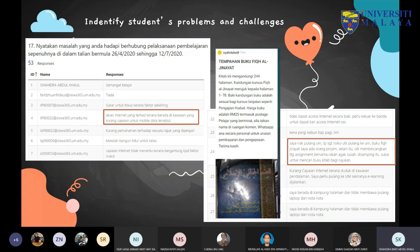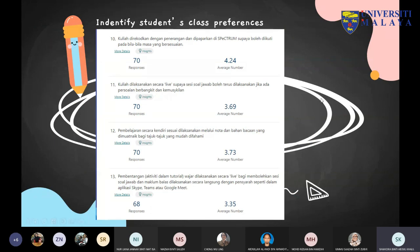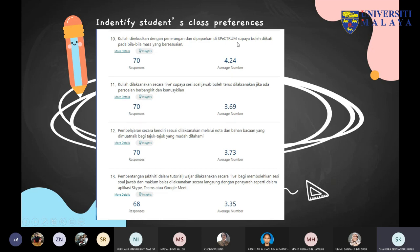Because of these responses, I opened a booking system on my Padlet for the Fiqh al-Jinayah textbook and became an online book seller — I sourced the books for them and posted them to their hometowns. Students just commented on my Padlet who wanted the book and I would post it to them. I also tried to identify student class preferences — how they would like me to deliver the lecture. Using a Likert scale, responses averaging 4.24 showed students agreed that conducting the class asynchronously with recorded slides and explanations uploaded to Spectrum was preferred.